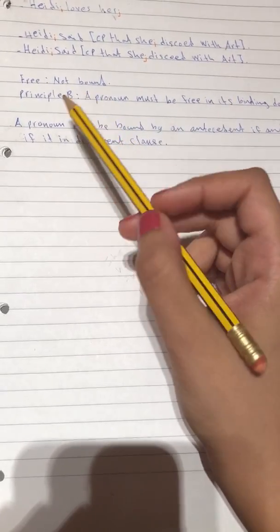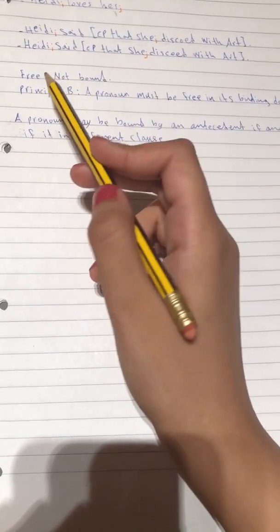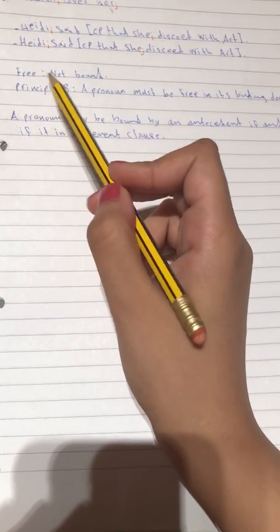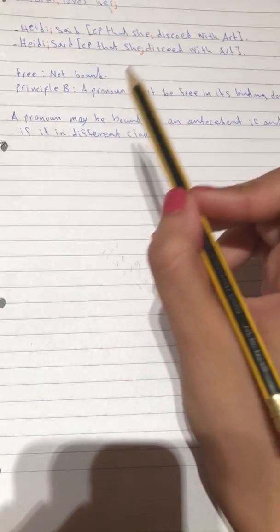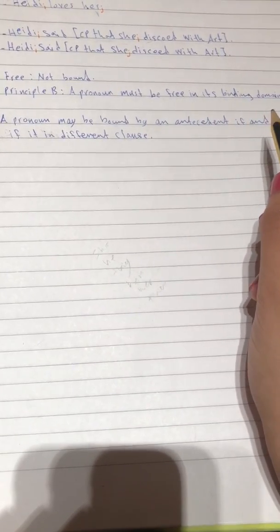Here we have a principle B, or let's start from here. A free pronoun, free pronoun means not bound. So principle B says that a pronoun must be free in its binding domain.